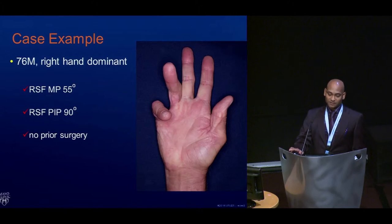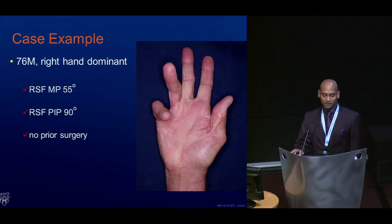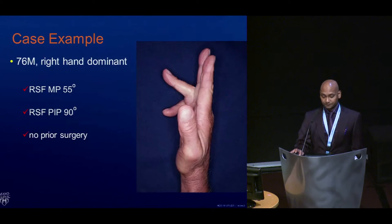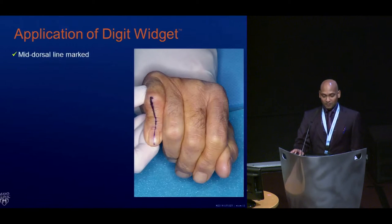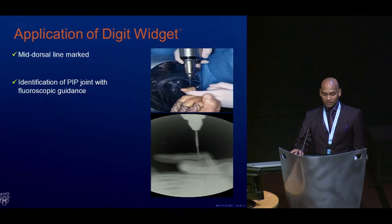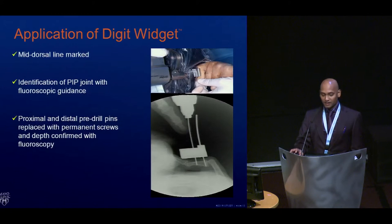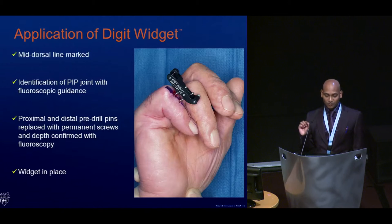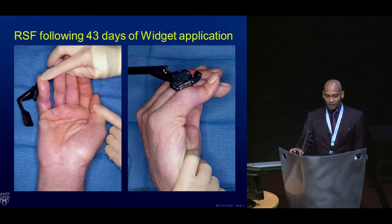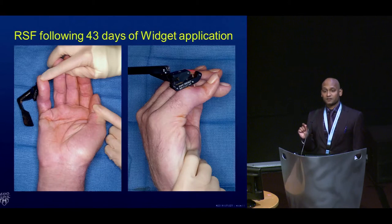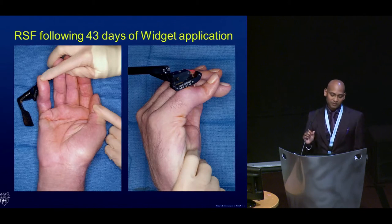For a case example, I'm presenting a 76-year-old right-hand dominant male with a right small finger MP flexion deformity at 55 degrees and PIP joint at 90 degrees, with no prior surgery. The widget application involves identifying the mid-dorsal line, then using fluoroscopic guidance to identify the PIP joint. Proximal and distal predrills are placed through a guiding jig, the widget is placed after jig removal, and the pin block is placed.